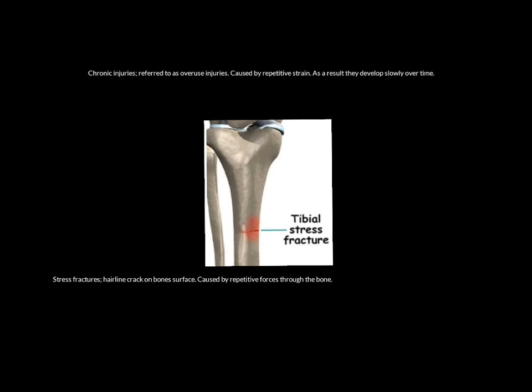Now let's look at some chronic injuries — the ones that come on over long periods of time with no immediate onset; more of a delayed onset. They're often referred to as overuse injuries, caused by repetitive strain, and they develop slowly over time. A stress fracture is a classic example of a hard tissue chronic injury — that fracture hasn't occurred through one act of trauma, but through repetitive strain.